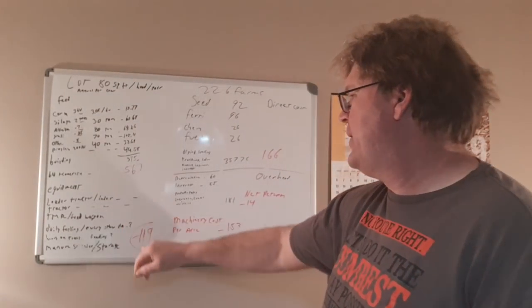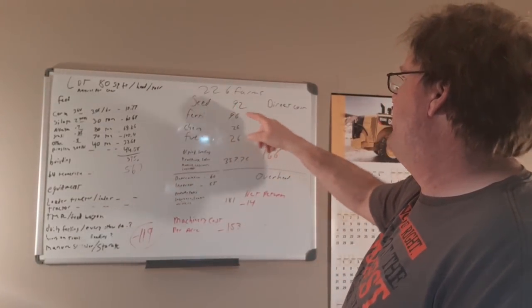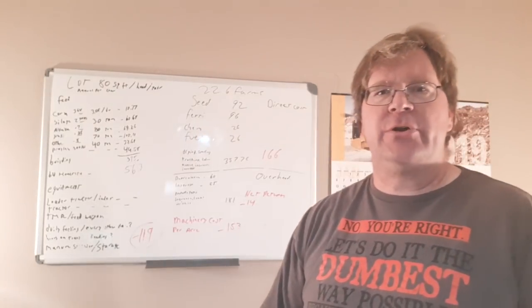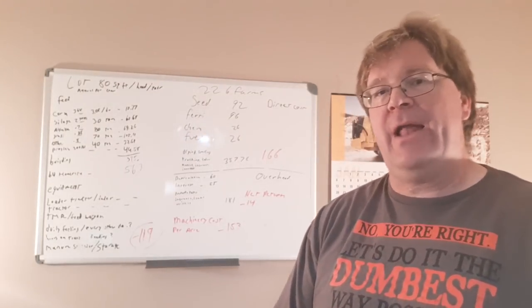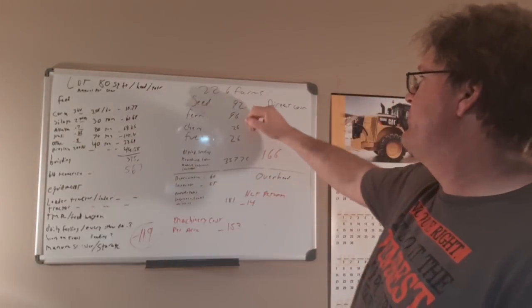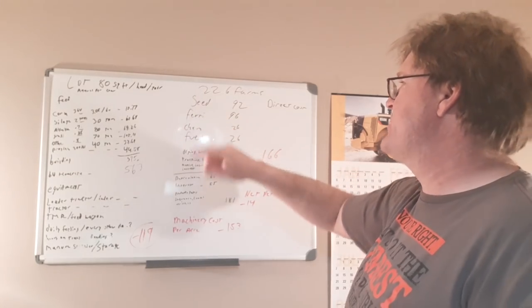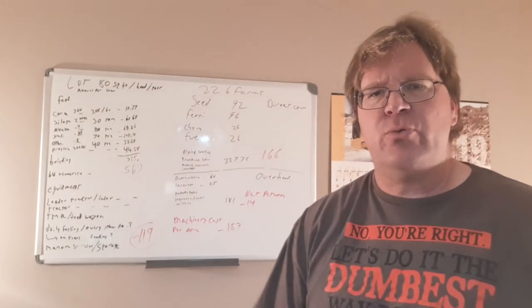And so we had our minus $19 loss. So 226 farms, they had an average of 160 bushel to the acre and they have an average price of $3.08 for corn. Your normal direct input stuff: seed $92, fertilizer $96, chemicals and fuel both at $26.